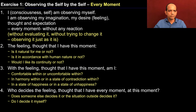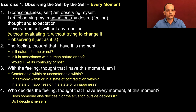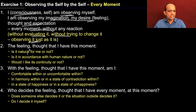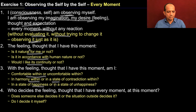As an outcome, if you look at the conclusion: I am the consciousness, I am the self and I am observing myself — the consciousness is observing the consciousness. So I am observing my imagination, that is to say my desire, that is feeling, my thought, my expectation, every moment without any reaction, without evaluating it, without trying to change or modify it, without imposing anything, just observing it just as it is. In step one, you don't have to make any evaluation. Then step two, the feeling or the thought that I have at this moment — you are asking yourself: is it natural for me or not? Is it in accordance with human nature or not? Would you like its continuity or not? In step three, you are saying: the feeling and thought I have at this moment, am I comfortable within or uncomfortable within? In harmony within or contradiction within? Happiness within or unhappiness within?